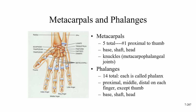Moving into the hand: the palm contains the metacarpals — five total. We number them starting with the thumb side: one through five. This is clinically important for identifying specific bones. The first metacarpal is proximal to the thumb.